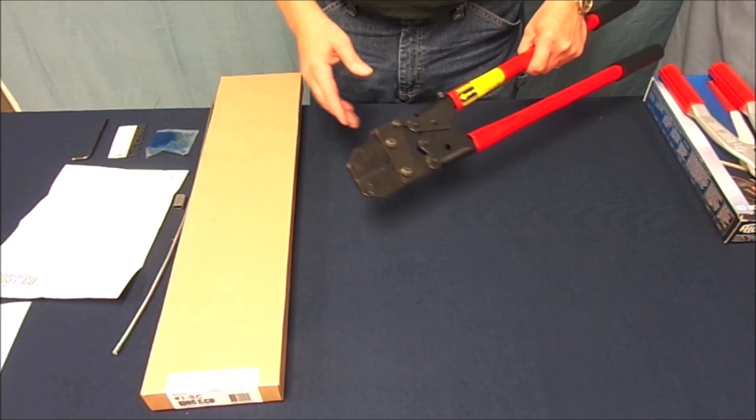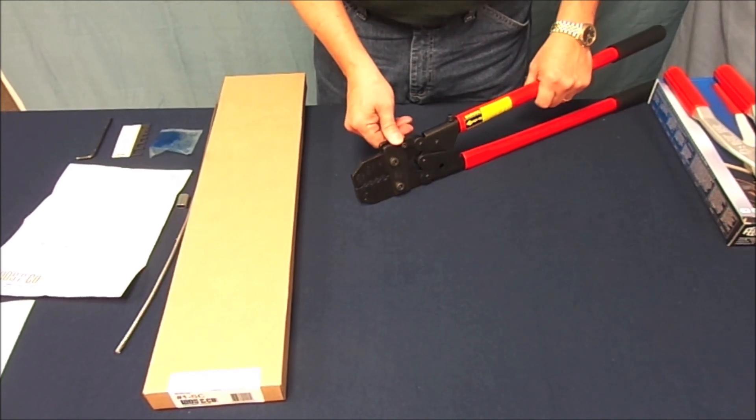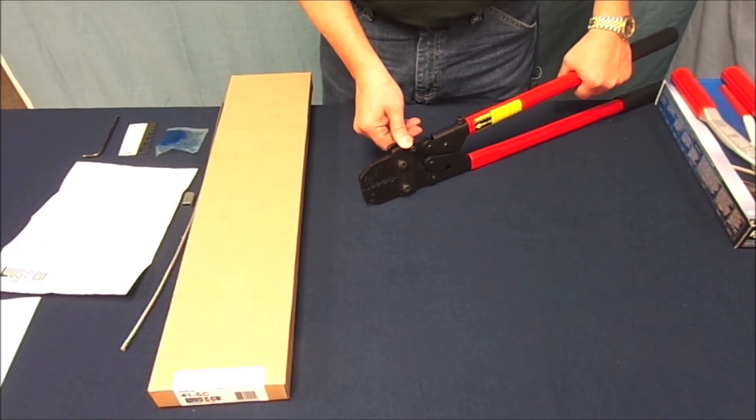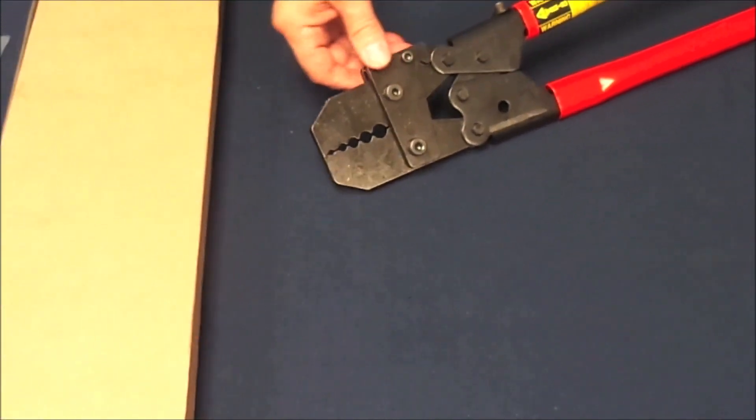This is a five cavity tool capable of swaging 1-16 through 3-16 aluminum and copper oval and stop sleeves and is proudly made here in the USA.